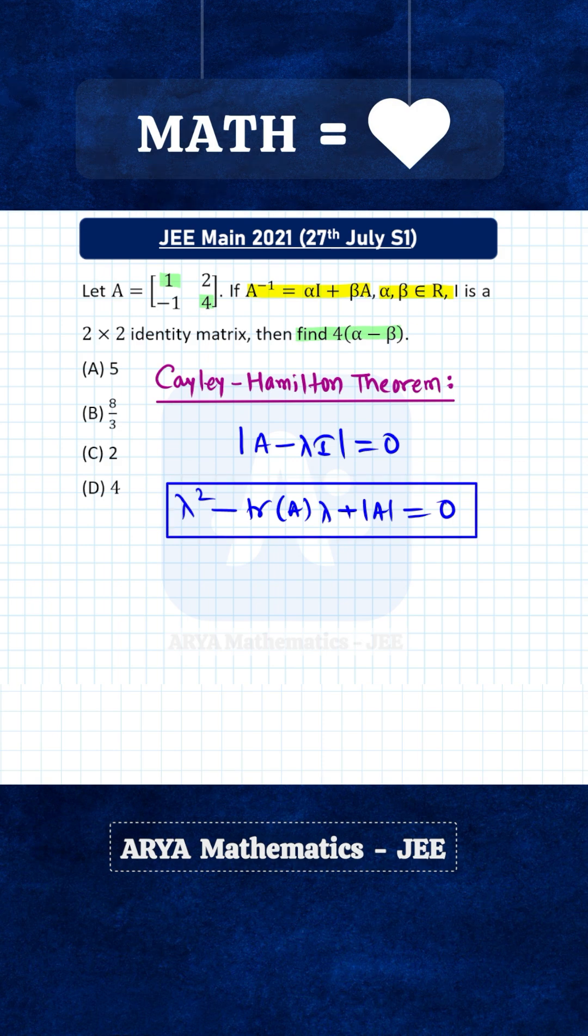Using this formula for matrix A, the characteristic equation is λ² minus trace (sum of diagonal elements), which is 5λ, plus determinant of A, which is 6. So the characteristic equation is λ² - 5λ + 6 = 0.